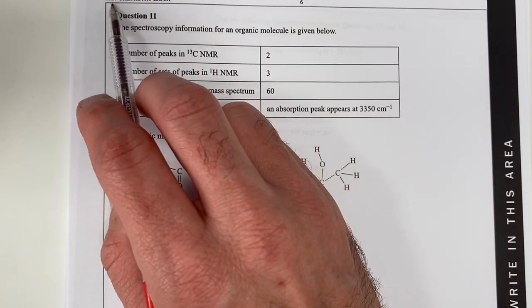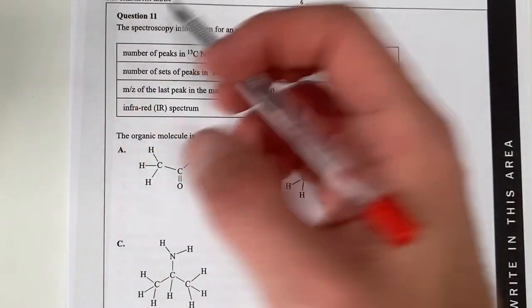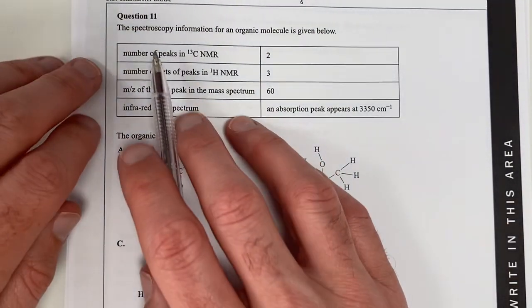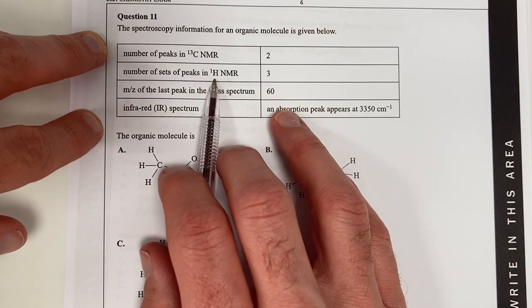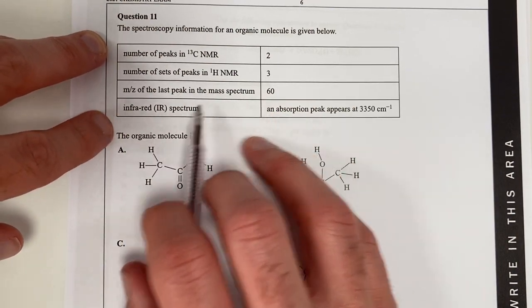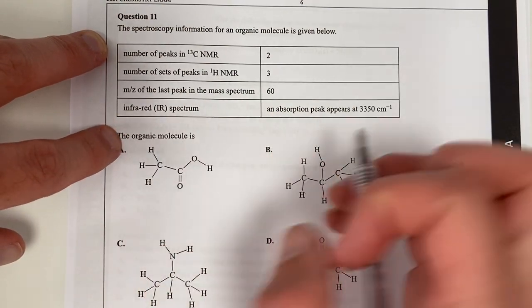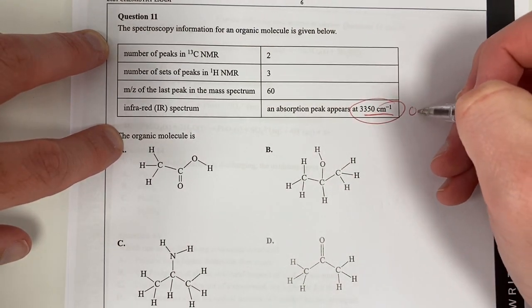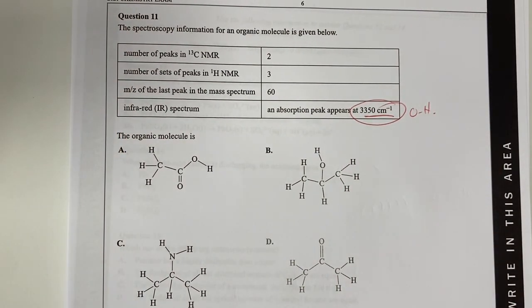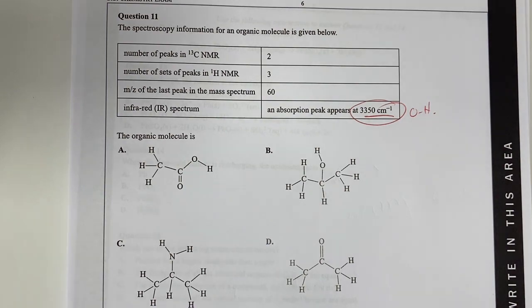Question 11 for the 2021 VCAA Chemistry exam, and this one is to do with spectroscopy. So we've got the peaks in CNMR and HNMR, and we've got a mass spectrum peak. So therefore, infrared spectrum peak appears at this section here. That probably could be an OH, based on my knowledge of the absorptions for different functional groups.